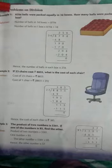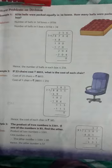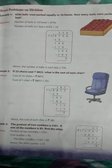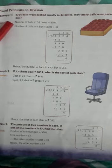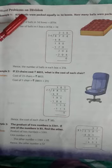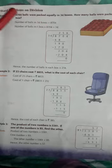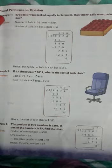Example 1: 8704 balls were packed equally in 34 boxes. How many balls were packed in each box? Students, when we add something to each or one, then we will do division.